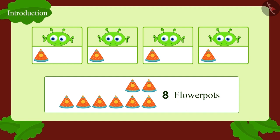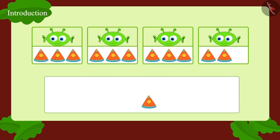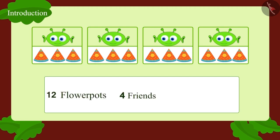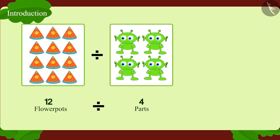Now we will continue giving one flower pot each to the four friends until all the flower pots are over. In this way, 12 flower pots have been divided among four friends. How many flower pots did each friend get? Absolutely right — three flower pots! How do we write it in the form of division?